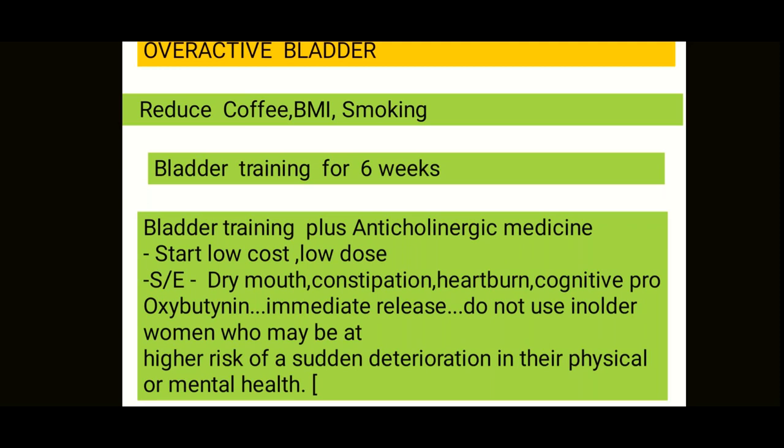The third step is bladder training combined with anticholinergic medicines. In EMQs, if bladder training has been done for six weeks, the next step is anticholinergic medicine plus continued bladder training — remember to continue the bladder training. Any medicine should be started at a low dose, especially anticholinergics, because of their many side effects: dry mouth, constipation, heartburn, and cognitive problems.